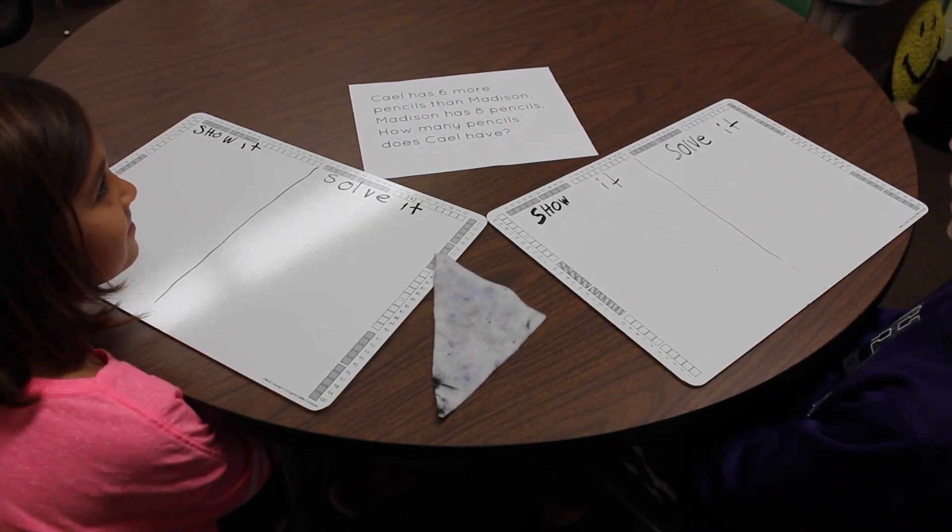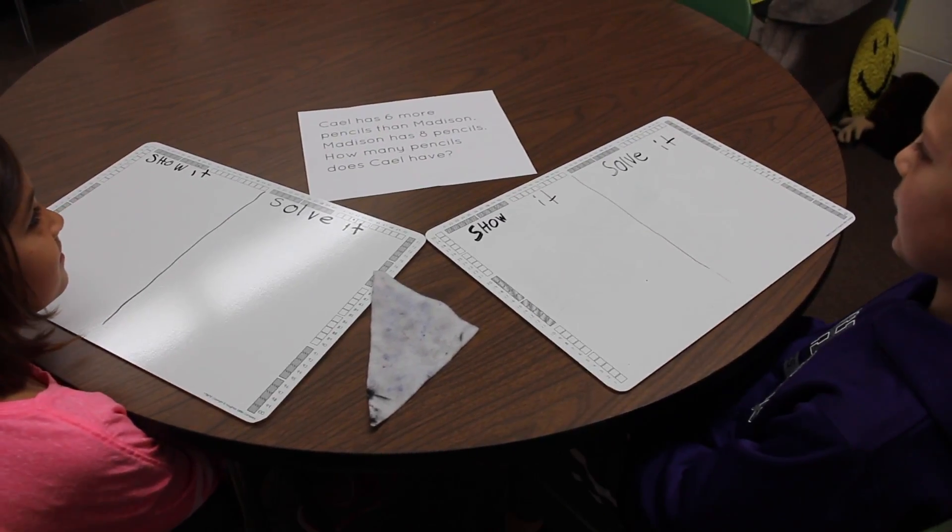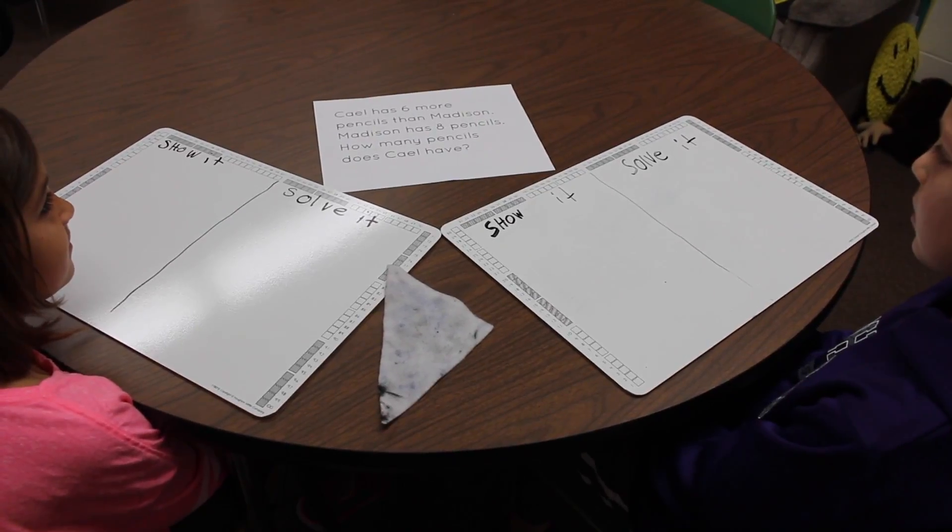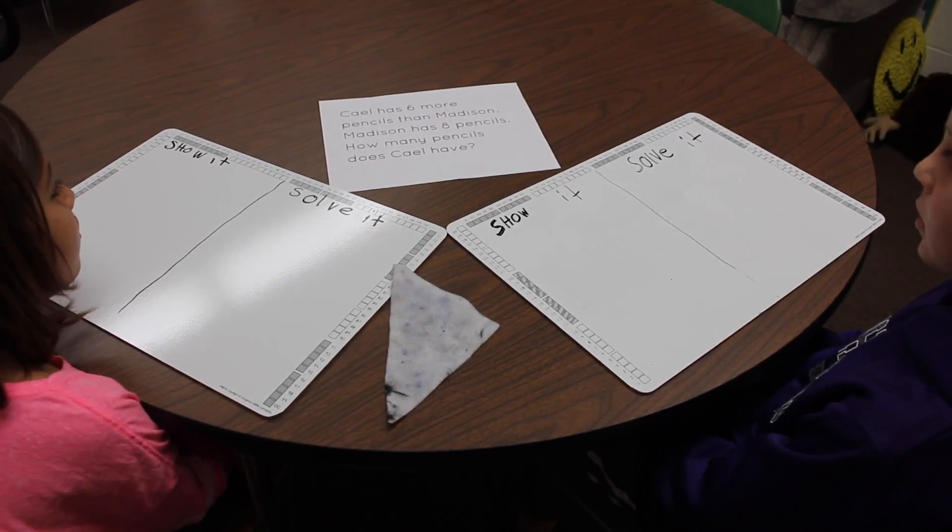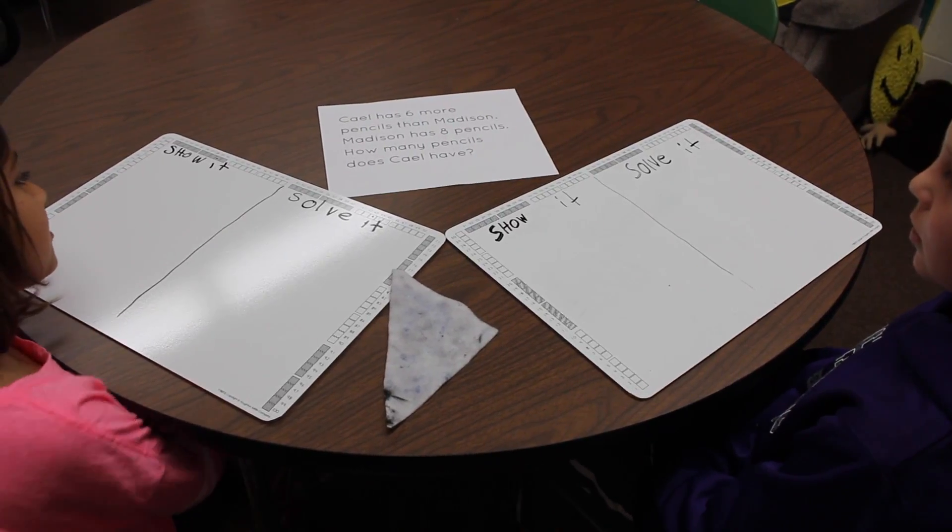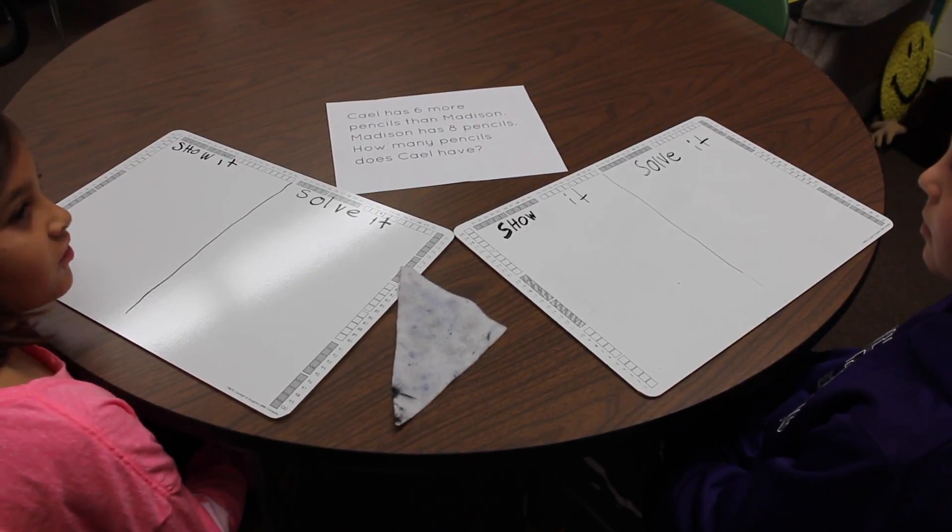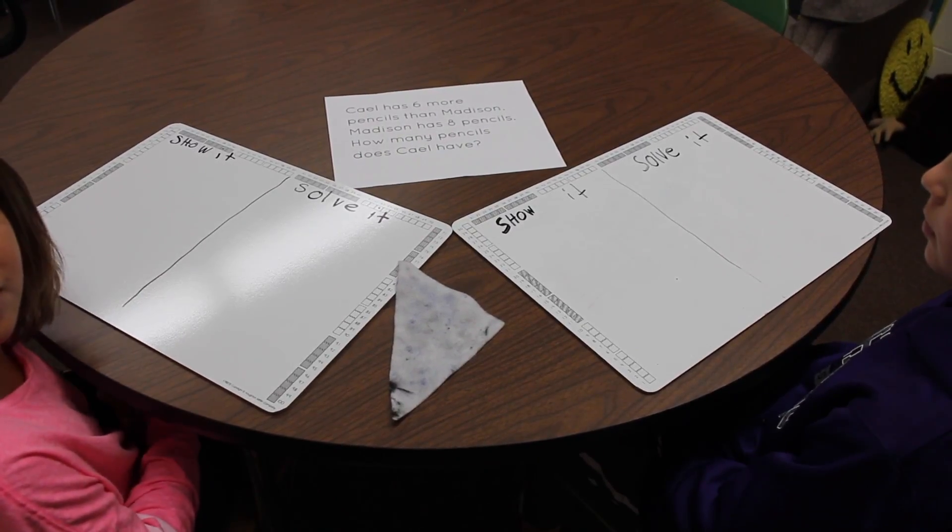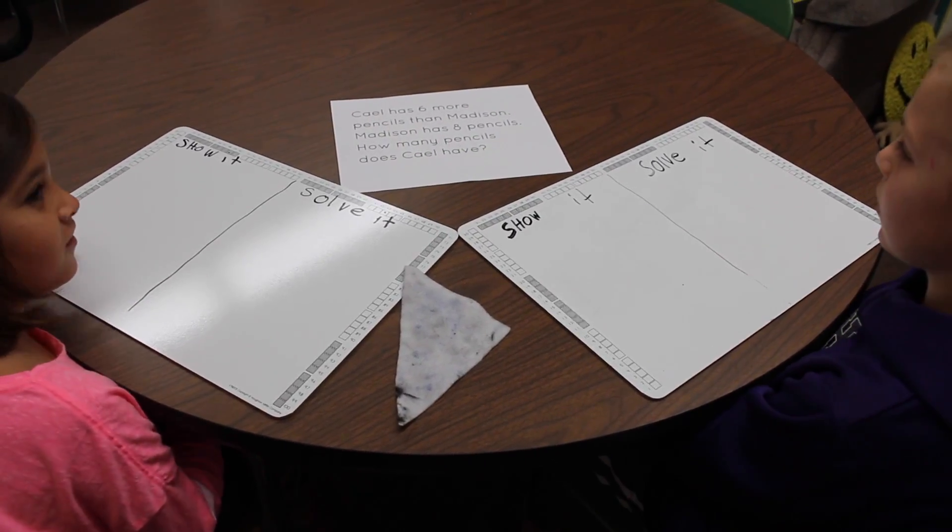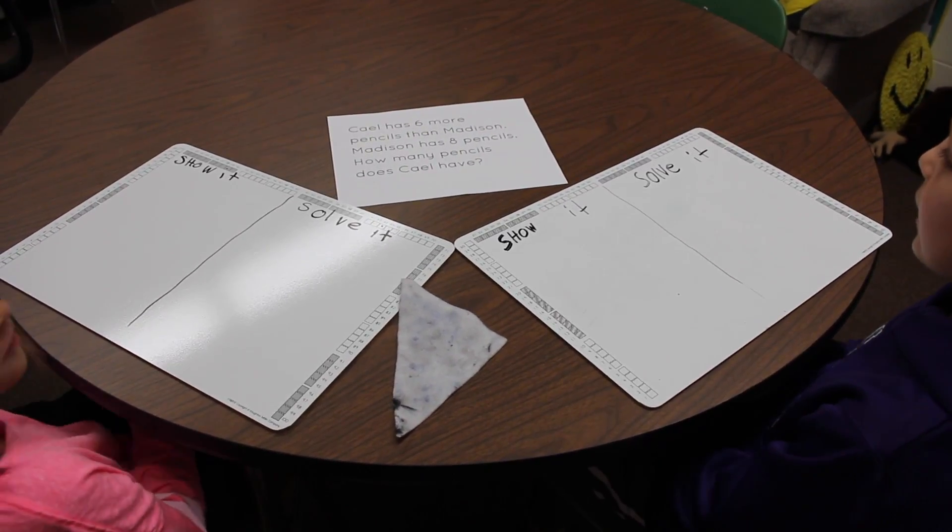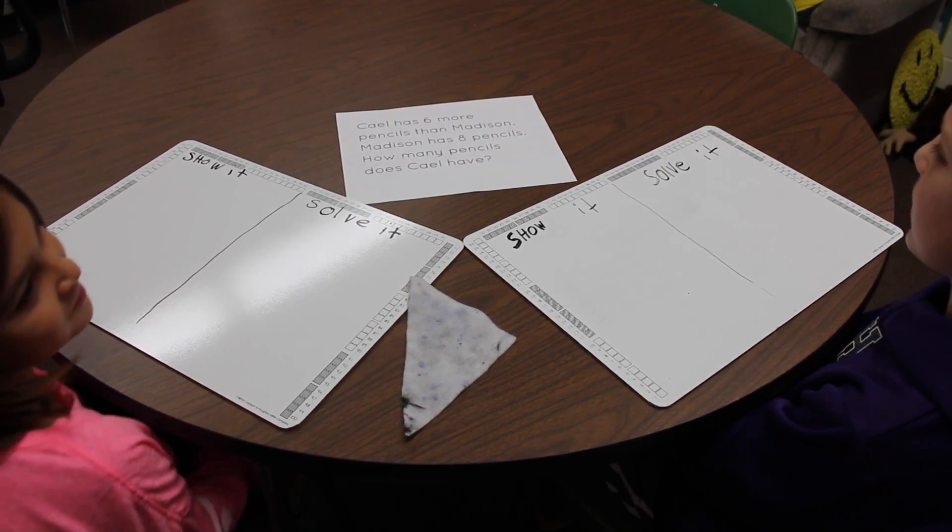So what's happening in this story, Madison? We're trying to figure out how many Cal has. Okay, so that's what we're trying to figure out. What do we know? We know that Madison has eight and Cal has six more than Madison does.